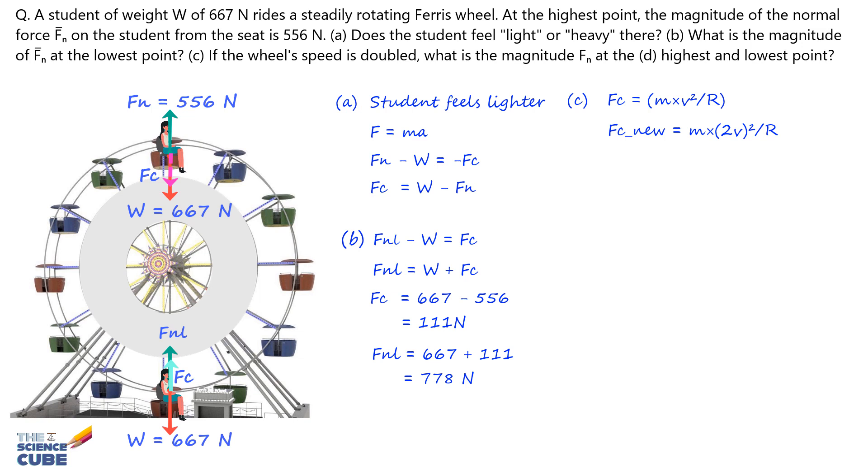If you simplify this, it equals 4 times Mv squared upon R, which is nothing but 4 times the original Fc, because Mv squared upon R is the original Fc. So this equals 4 times 111 Newtons or 444 Newtons.